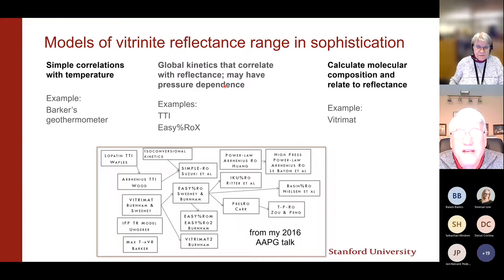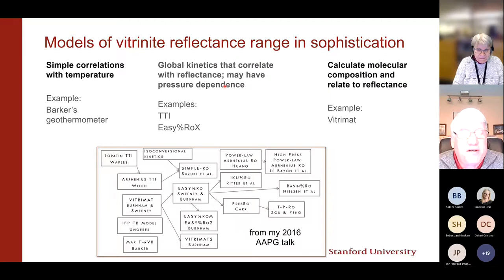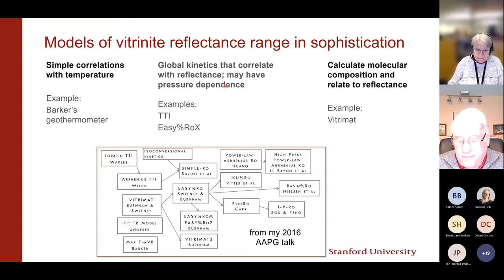In general review, you can lump vitrinite reflectance models into three broad categories. Going way back, there are simple correlations with temperature — Barker's geothermometer is one example. On the other end, there's molecular modelling, which tries to calculate composition and estimate reflectance from that; Vitromat, published around 1989, is an example. In the middle is a hybrid approach using a chemical kinetic index correlated to reflectance. There are many different models, but Easy%Ro seems to be the most prevalent — and I'll argue people should probably make a change.